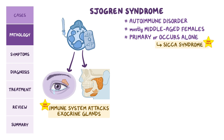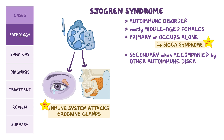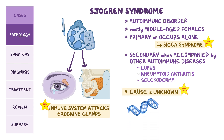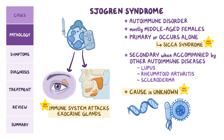Alternatively, it can be secondary when it is accompanied by other autoimmune diseases like lupus, rheumatoid arthritis, and scleroderma. The exact cause of Sjogren's syndrome is unknown, but both genetic and environmental factors are involved.